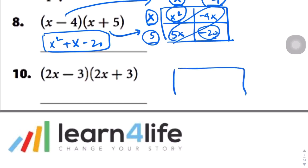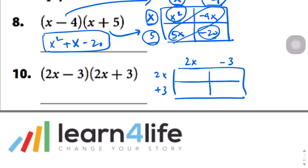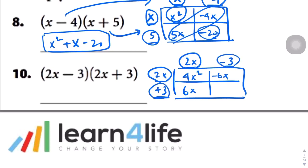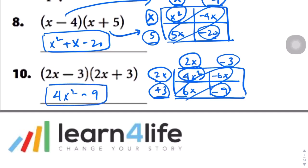Question 10: here we have two binomial expressions — 2x minus 3 and 2x plus 3. Let's multiply these out. 2x times 2x gives us 4x squared. 2x times negative 3 gives us negative 6x. 3 times 2x gives us 6x. And 3 times negative 3 gives us negative 9. Let's write this out: 4x squared, and then 6x and negative 6x cancel each other out, leaving just negative 9. So our answer is 4x squared minus 9.